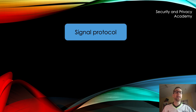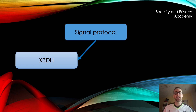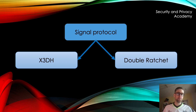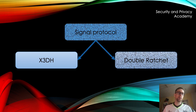The Signal protocol is made up of two parts. We have the Extended Triple Diffie-Hellman, or X3DH for short, and the Double Ratchet Algorithm, which is the heart of the Signal protocol. First, let's take a look at X3DH.